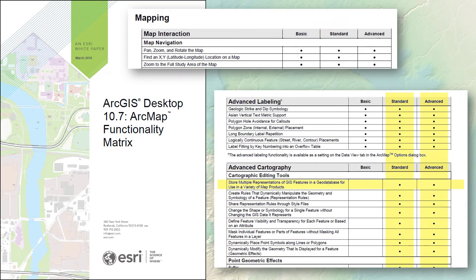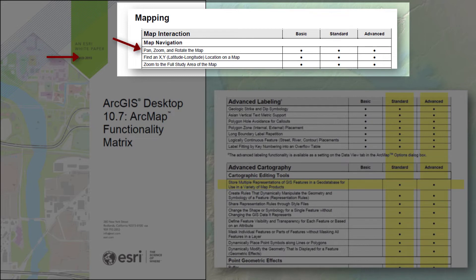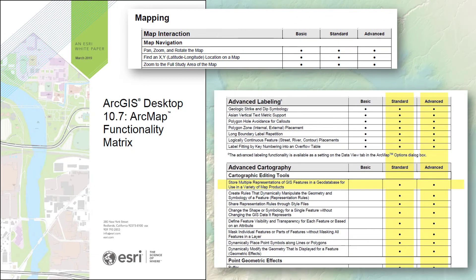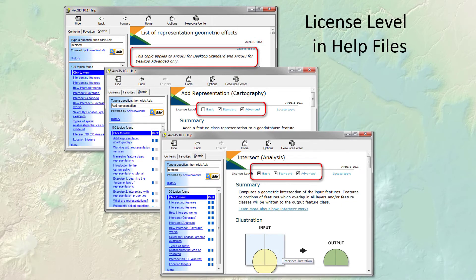Here's a picture of that 10.7 functionality matrix. At the top you can see a few tools listed — pan, zoom, and rotate; find XY location; zoom to full study area — all available at all three license levels: Basic, Standard, and Advanced. But there are tools not available at all three levels. For example, the advanced cartography tool called Store Multiple Representations is only available at Standard and Advanced. And some tools are only available at Advanced. If you're working with the Forest Service and get used to a tool, then move to a non-profit, you may not have that tool available. You can look it up in the functionality matrix or check the help files — click the help button in a tool and it will tell you what license levels it works at.